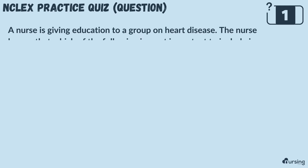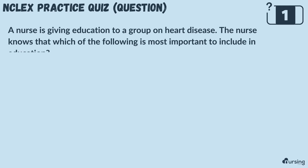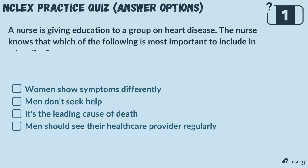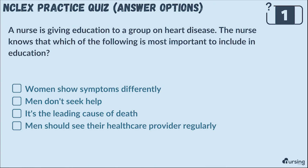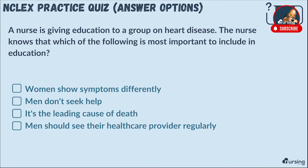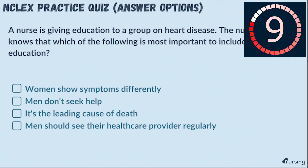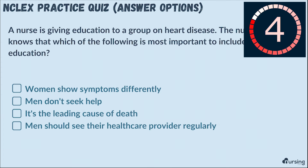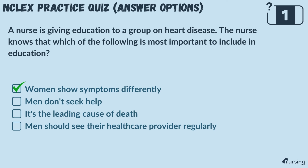A nurse is giving education to a group on heart disease. The nurse knows that which of the following is most important to include in the education? Is it: women show symptoms differently, men don't seek help, it's the leading cause of death, or men should see their health care provider regularly? The correct answer is women show symptoms differently.